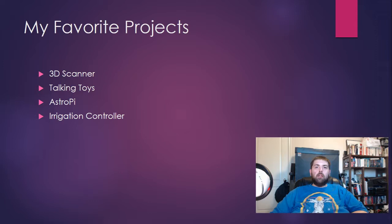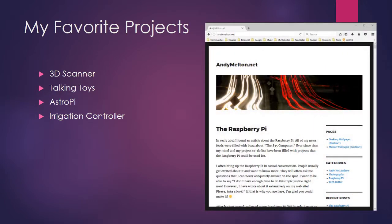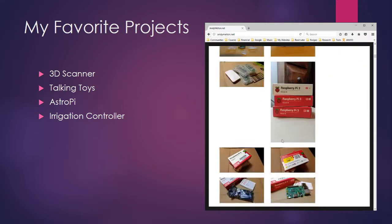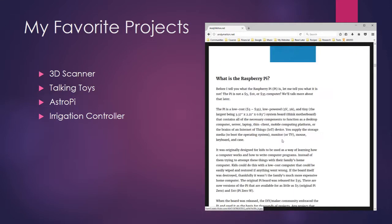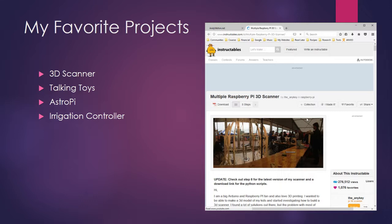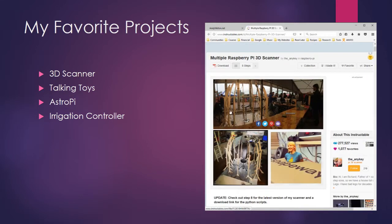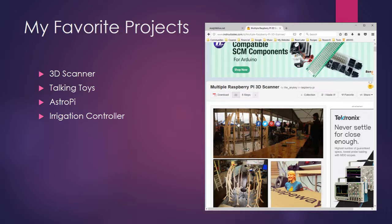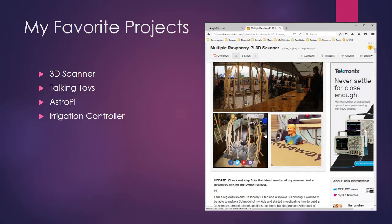Speaking of projects, out on my website I have linked to four of my favorite projects. The first one is a 3D scanner, where someone has built a cage that has a lot of Raspberry Pis around it, each with a camera connected. It allows them to take a 3D image of a person and print it out on a 3D printer, which is fantastic. It's not holographic technology, but we're getting there.